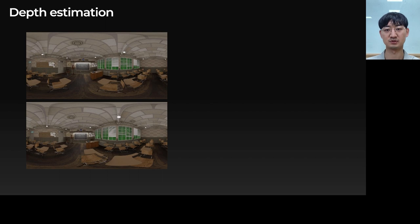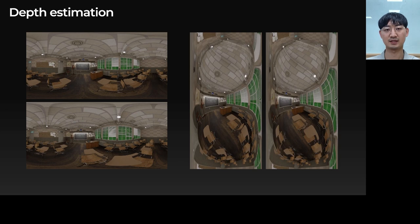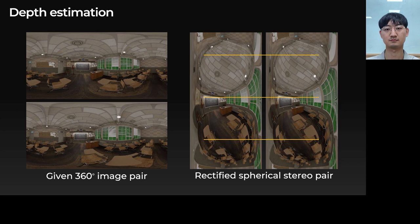After finding the per-frame camera poses, we estimate the per-frame depth map. For a target frame, we select neighbor frames first. Then, for each stereo image pair, we convert it into a rectified spherical image pair, such that matching pixels are aligned horizontally.